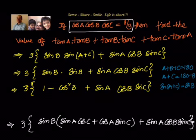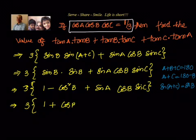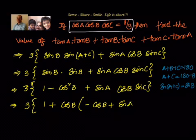Now we can take cos B common in both terms. So in the next step, we take cos B common and write the expression as 3 times 1 plus cos B into negative cos B plus sin A sin C. We leave 1 as it is and write 1 plus cos B times the remaining factor.